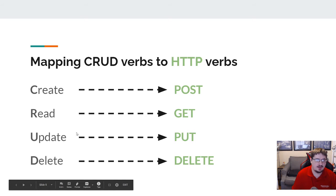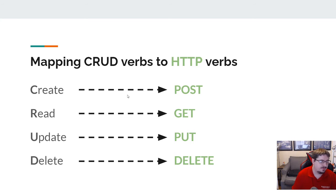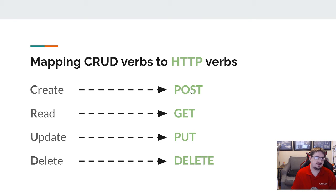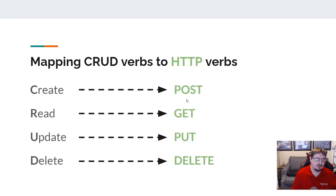The two that people usually get confused are update and create — those are the ones you want to keep straight. When you're adding data to the database and we're talking about REST APIs, that's going to be a POST request. If we're updating data, that's going to be a PUT request. Now, if you're just doing forms, normally we'll still stick with GET and POST.